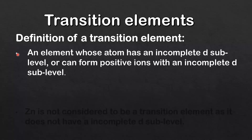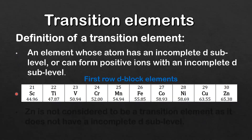A transition element is an element whose atom has an incomplete D sublevel, or can form positive ions with an incomplete D sublevel. Here we have the first row D block elements from scandium to zinc.